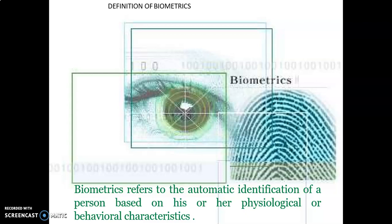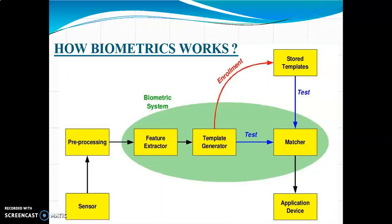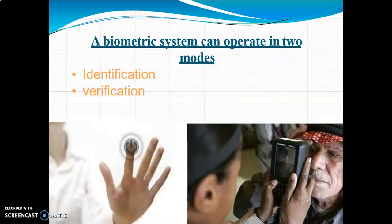Biometrics refers to the automatic identification of a person based on their physiological or behavioral characteristics. The biometric system works as follows: first the sensor detects it, then pre-processing, followed by feature extraction, template generation, measurement, and finally the application device.